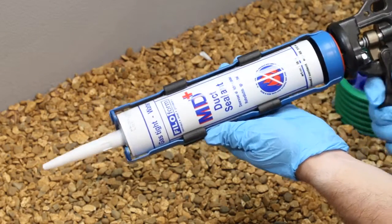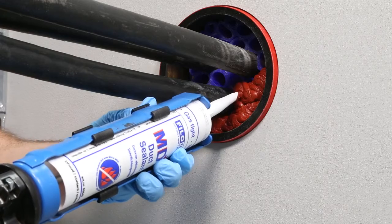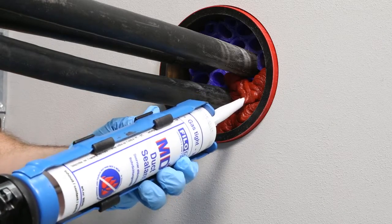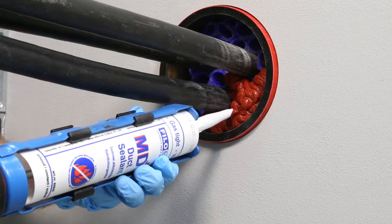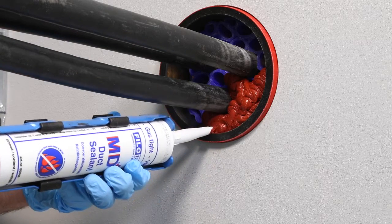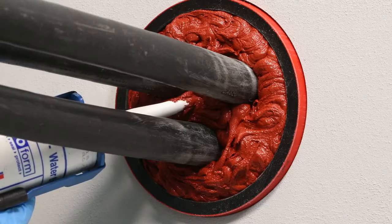Apply the MD Plus onto the hexagonal tubes, ensuring you get into every gap and around every cable or pipe. Fill up the end of the duct until slightly proud of the duct end.